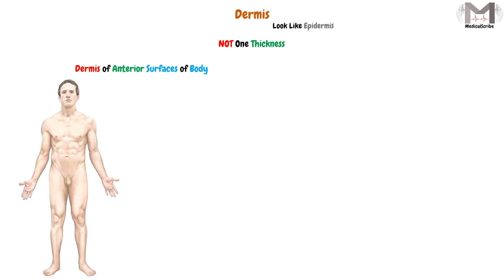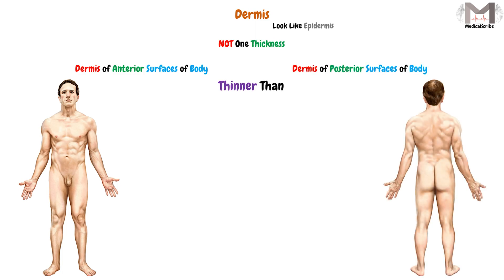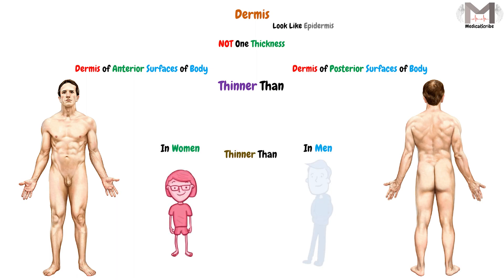The dermis, like the epidermis, is not of uniform thickness. Generally, the dermis of the anterior surfaces of the body will be thinner than the dermis of the posterior surfaces of the body. Also, in women, it will be thinner than that of men.